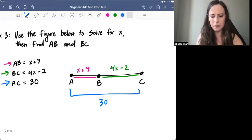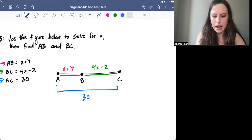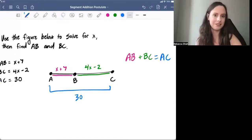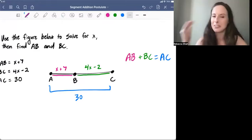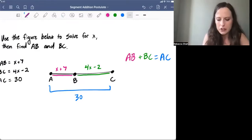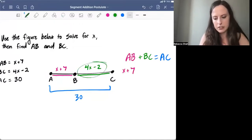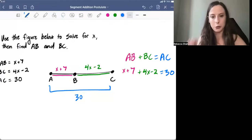So using our Segment Addition Postulate, we're going to say that AB plus BC, those two smaller segments, have to add up together to equal AC, the whole thing. So now from here, we're just plugging in what we know, and then we're going to solve the equation from there. So AB is X plus seven. BC was 4X minus two. And notice I'm putting a plus in between those. And then that equals 30.